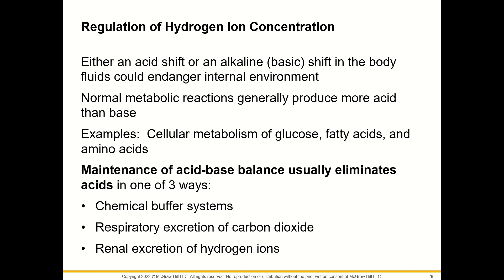Normal metabolic reactions generally produce more acid than base — for example, from cellular metabolism of glucose, fatty acids, and amino acids. The maintenance of acid-base balance usually eliminates acids in one of three ways: the chemical buffer systems, the respiratory excretion of carbon dioxide, and the renal excretion of hydrogen ions.